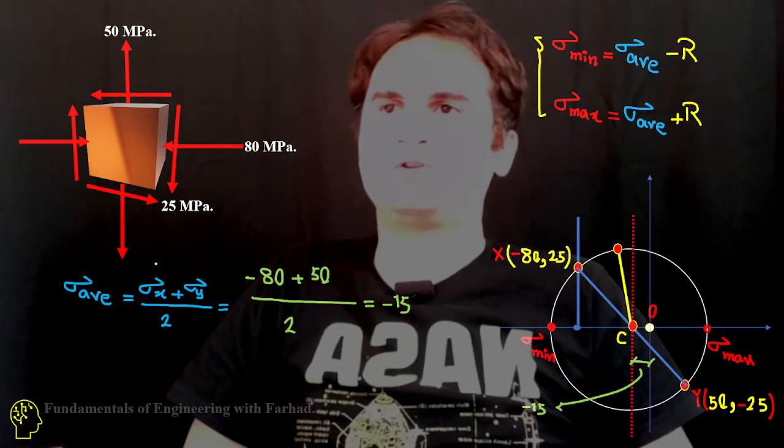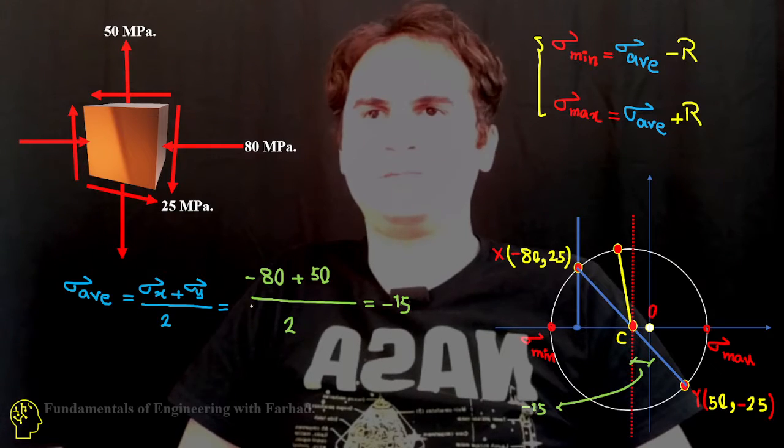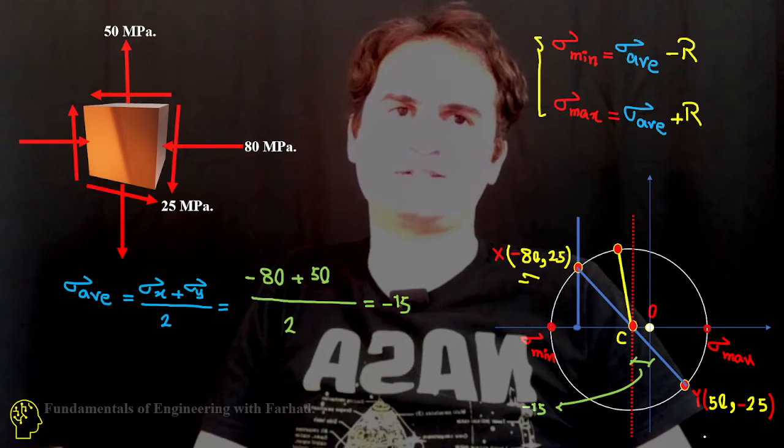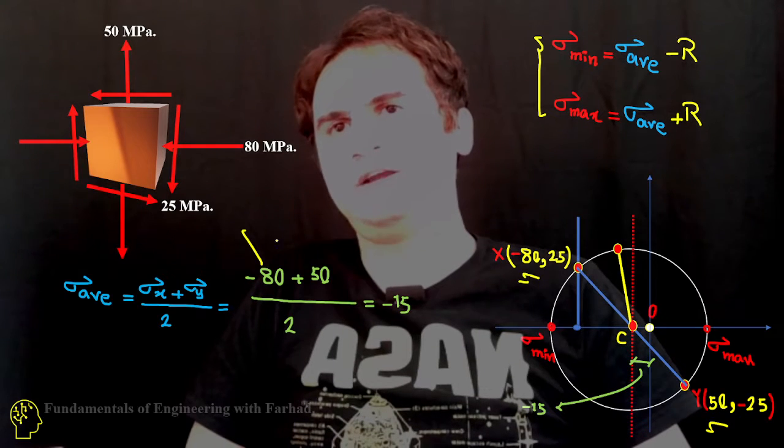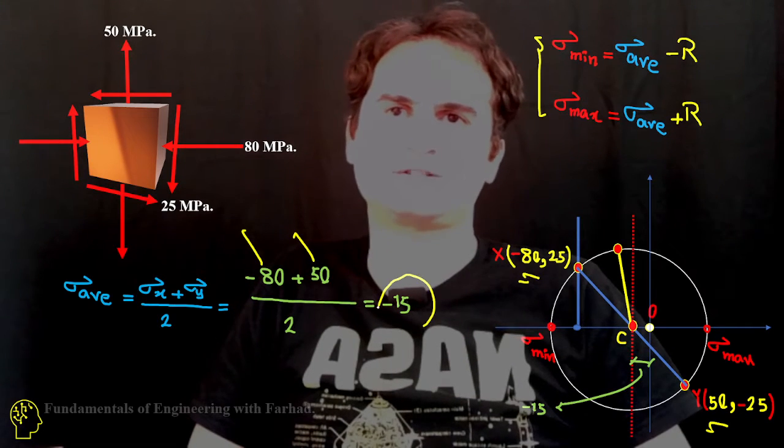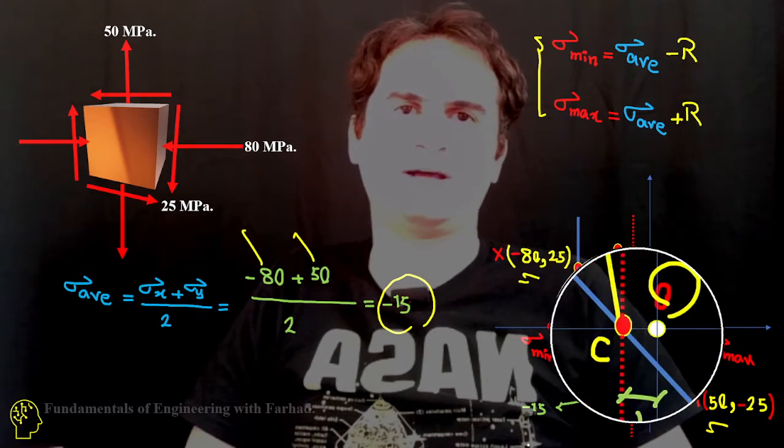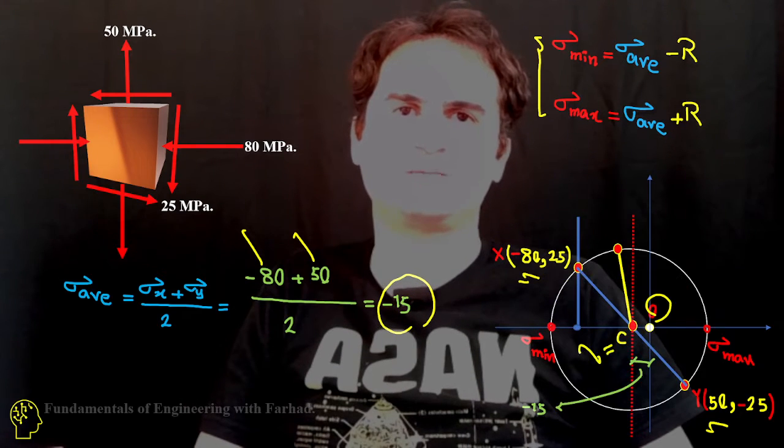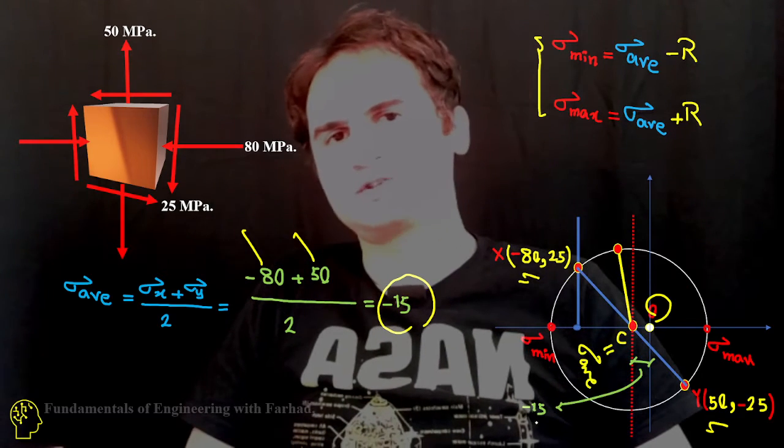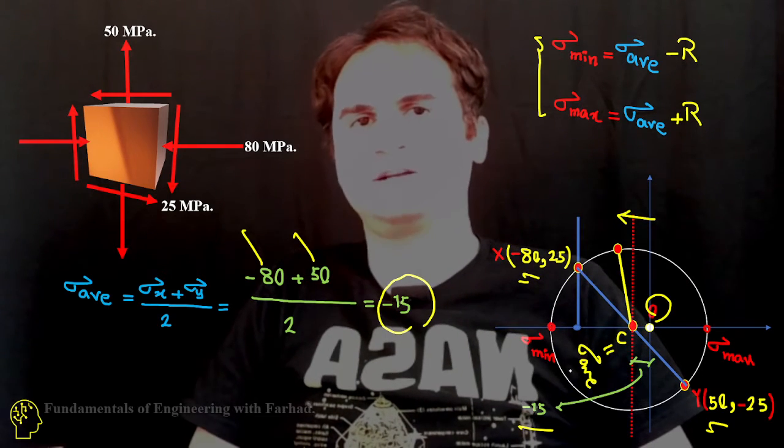At the same time, sigma average is simply the average of two stresses: the first one plus the second one over two. Negative 80 plus 50 over 2 is negative 15. That's the distance between the origin and our center of Mohr circle, which stands for sigma average all the time. So that's also in negative x direction, so that's negative 15.